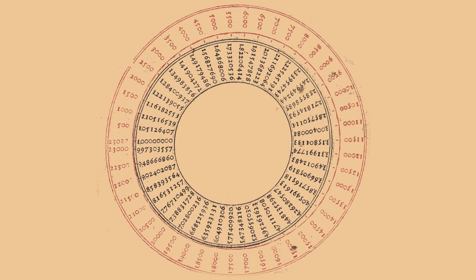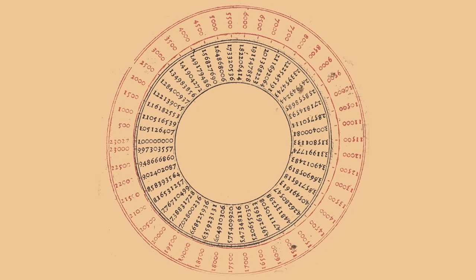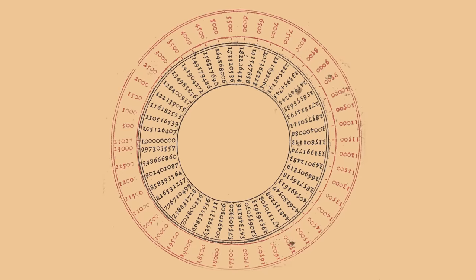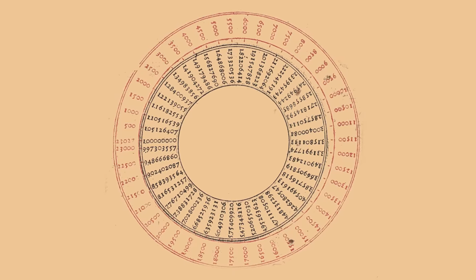On his title page, Berge arranges every 500th value from his table neatly into a circle. Although Berge doesn't say this explicitly, this circular arrangement is likely not just about aesthetics. It anticipates the most powerful computing device on the planet for the next 350 years.